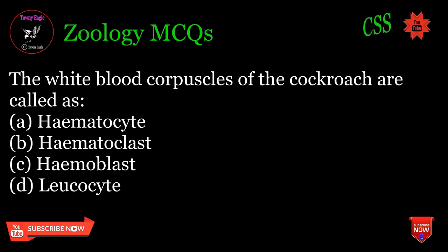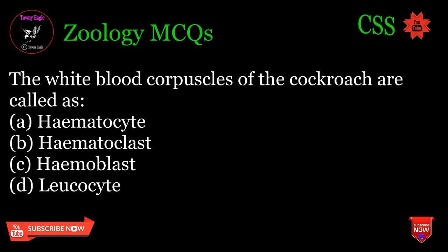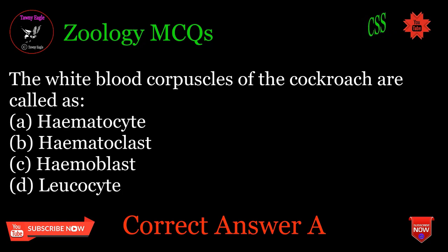The white blood corpuscles of the cockroach are called as: A. Haemocyte, B. Haemoclast. Correct answer: A.